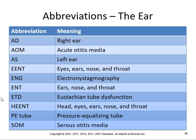Abbreviations for the ear: AD — right ear. AS — left ear. AOM — acute otitis media. EENT — eyes, ears, nose, and throat. ENG — electronystagmography. ENT — ear, nose, and throat. ETD — Eustachian tube dysfunction. HEENT — head, eyes, ears, nose, and throat. PE tube — pressure equalizing tube (tubes placed in the ear). SOM — serous otitis media.